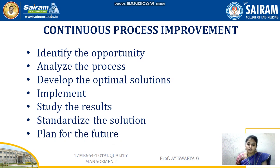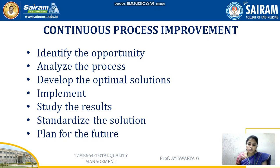We have seen different tools, how to identify the issues, and how to make corrective actions. Once corrective actions are made, the continuous process improvement steps are followed to make the changes in the company. In my next video, we will be seeing other tools and techniques of the quality process. We have also seen about the Juran Trilogy, which is also one of the methods for making continuous process improvement. I will be continuing in my next presentation. Thank you all.